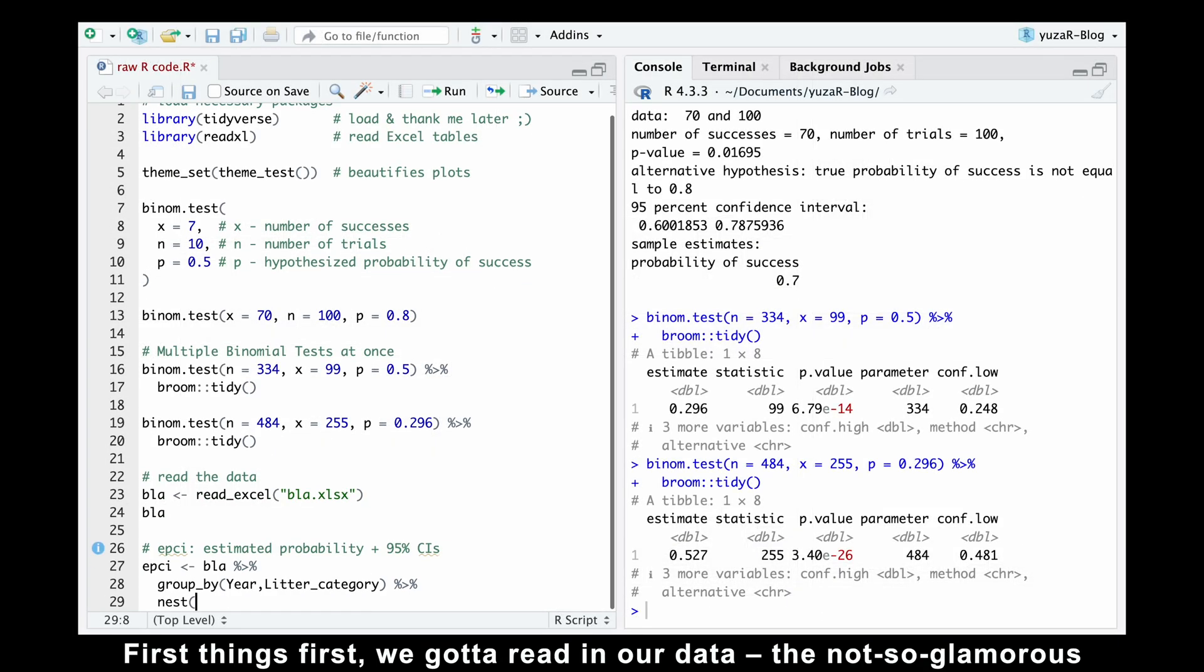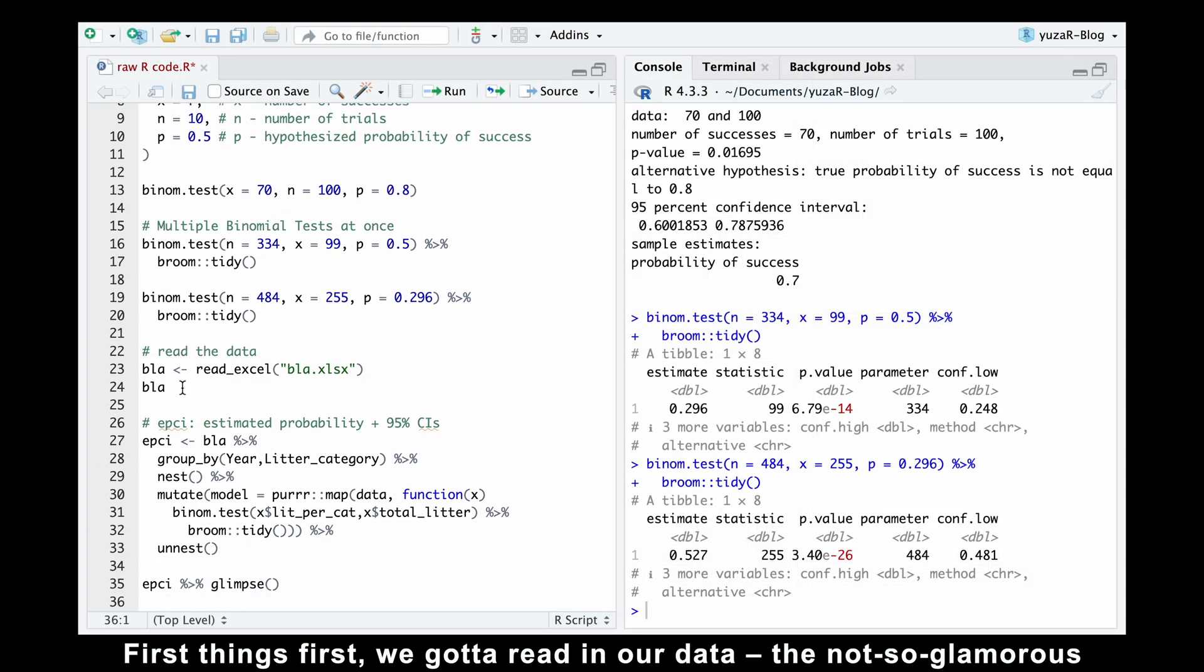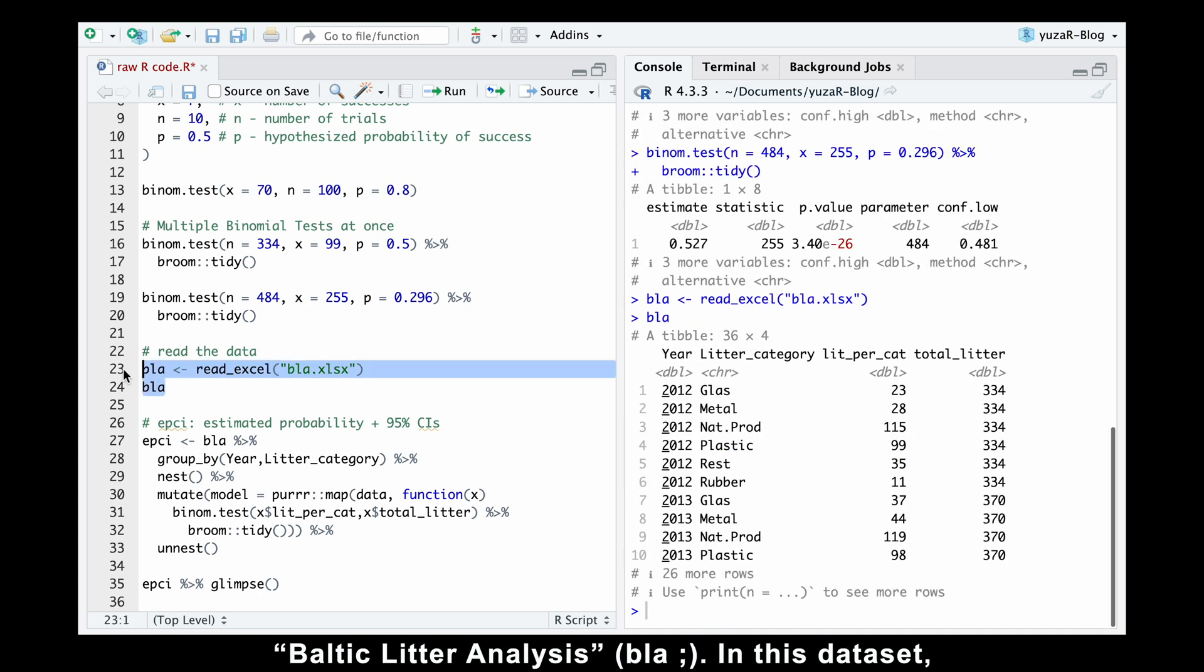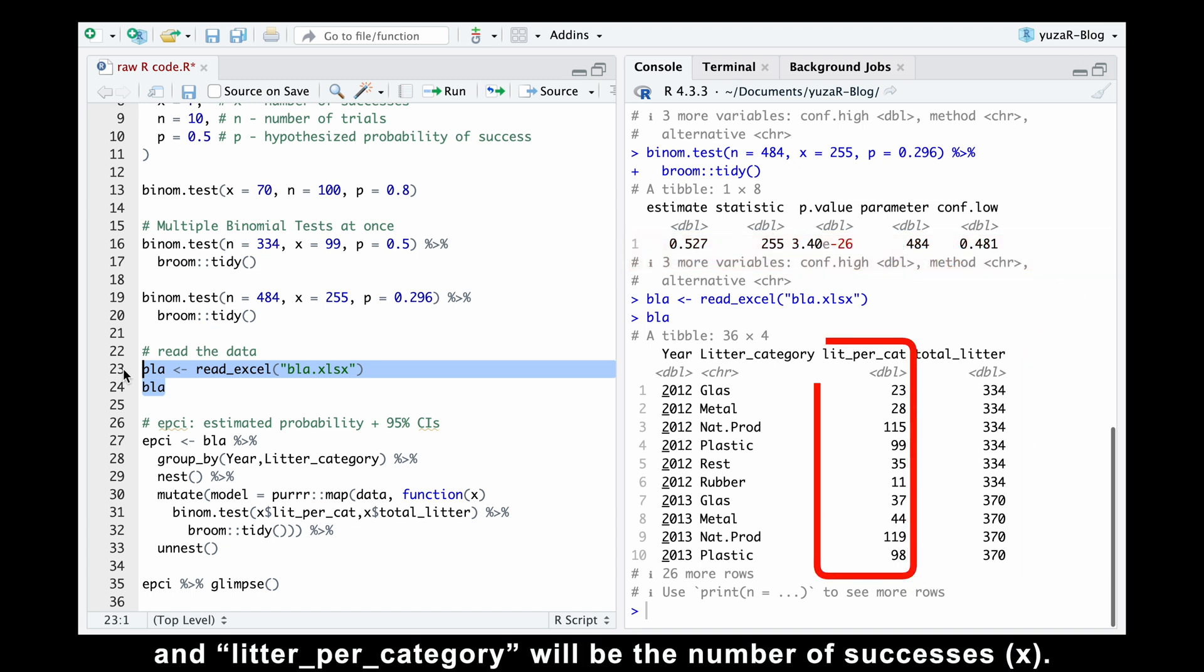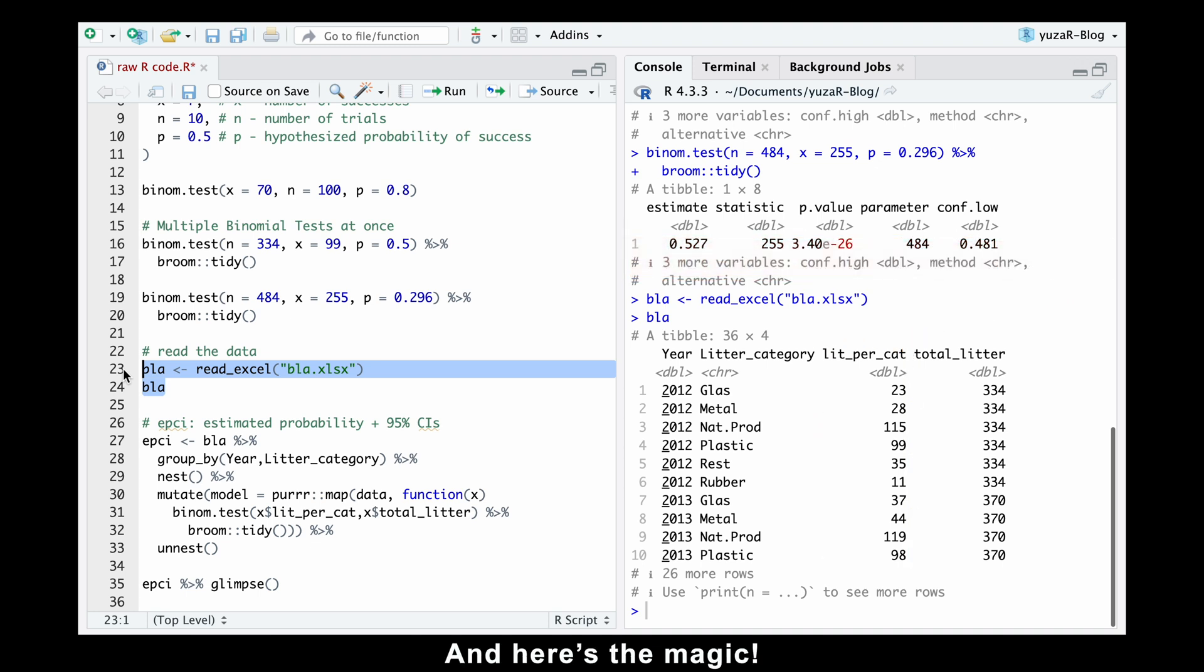First thing first, we got to read in our data, the not-so-glamorous baltic litter analysis. In this dataset, total litter will represent our total number of trials, n, for the test. And litter per category will be the number of successes, x. And here's the magic.